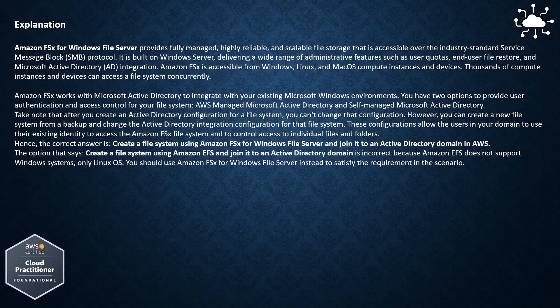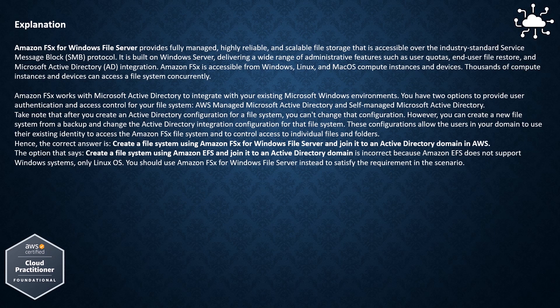Amazon FSx for Windows File Server provides fully managed, highly reliable, and scalable file storage accessible over the industry-standard Service Message Block (SMB) protocol. It is built on Windows Server, delivering administrative features such as user quotas, end-user file restore, and Microsoft Active Directory integration. Amazon FSx is accessible from Windows, Linux, and Mac OS compute instances and devices, and thousands of compute instances can access a file system concurrently. Amazon FSx works with Microsoft Active Directory and offers two options: AWS Managed Microsoft Active Directory and Self-Managed Microsoft Active Directory.